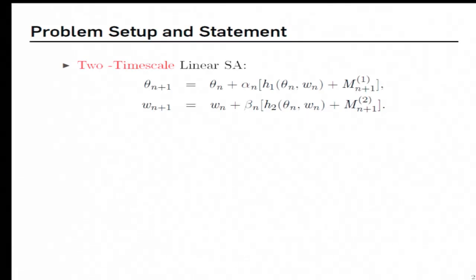The generic form of a two-time scale stochastic approximation is shown over here. Here, theta_N and w_N are iterates that are simultaneously updated in each iteration. Alpha_N and beta_N are step-size sequences. And the terms in the square bracket are noisy estimates of the evaluations of the functions h1 and h2 that we would have ideally liked to use, but we cannot for some reason. What makes this algorithm two-time scale is the fact that we use two different step-size sequences to update.